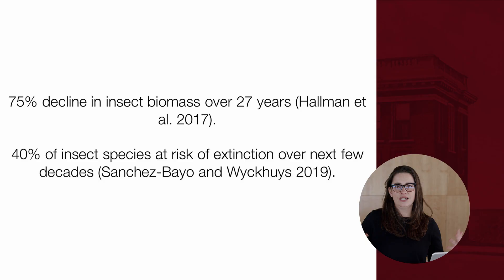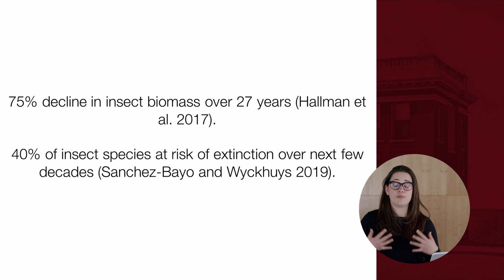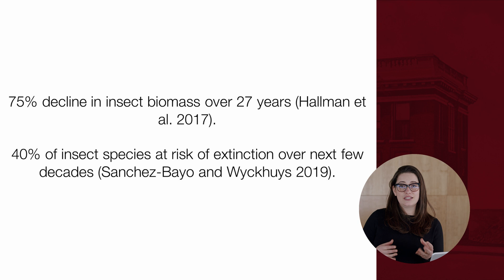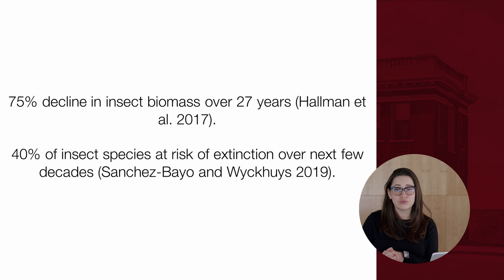However, insects are declining drastically. For many years, naturalists and researchers saw anecdotal evidence — like people no longer needing to squeegee their windshields after long drives. Now we also have strong empirical evidence. A German study published in 2017 found a 75% decline in insect abundance over 27 years, conducted in parks and protected areas — arguably some of the best habitat for insects.